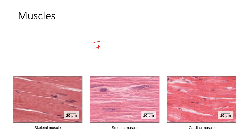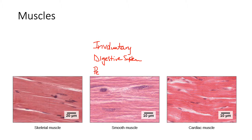Smooth muscle is involuntary, meaning you don't have to think about it. We find it in organs like our digestive system, and these smooth muscle tissues work in something called peristalsis to move our food through our digestive system.